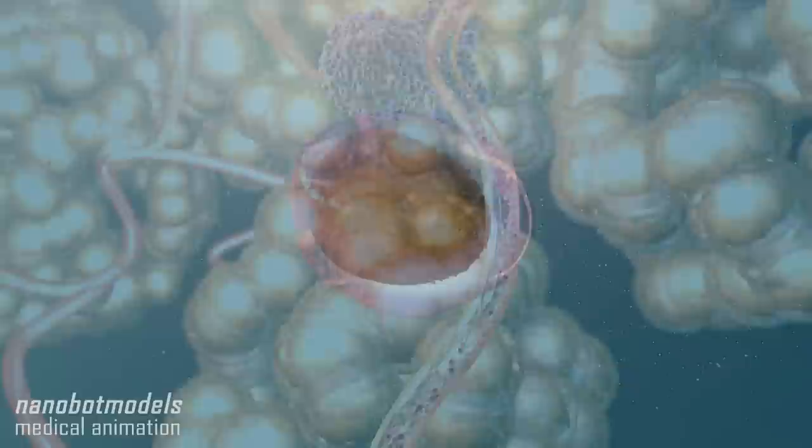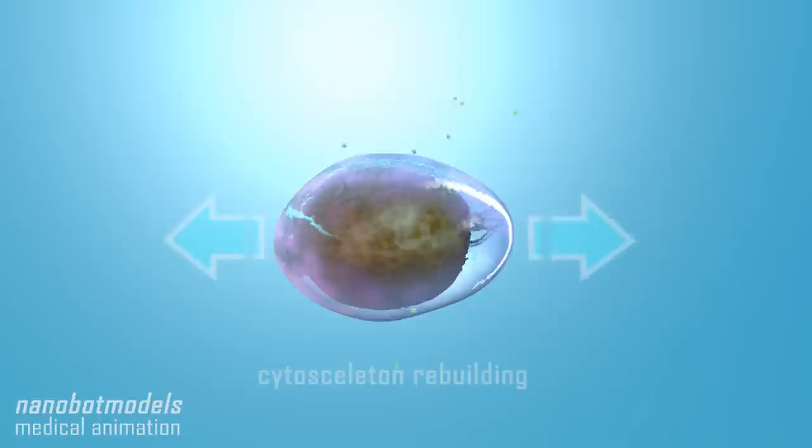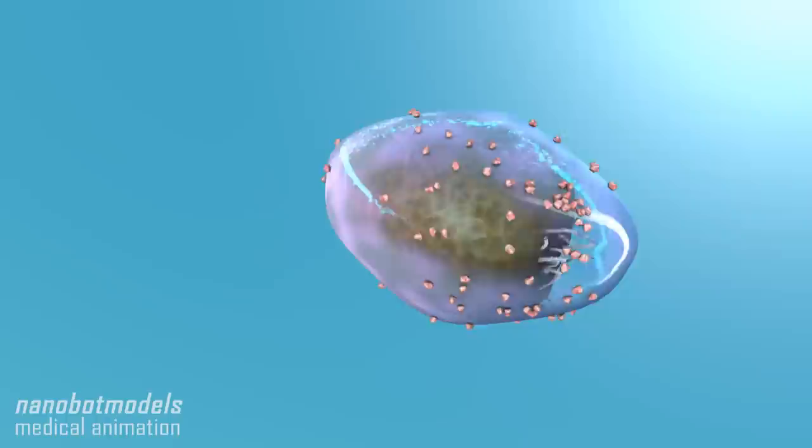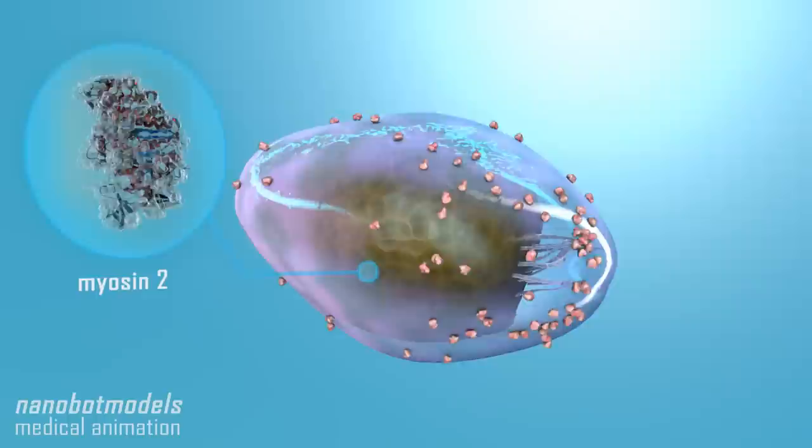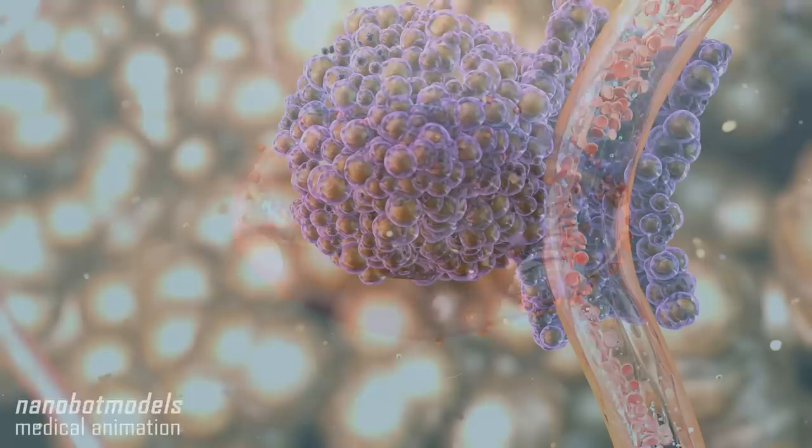During this process, called tumor cell invasion, a tumor cell undergoes changes. The cell changes its form and develops a preferential direction. Special receptors appear on the membrane, and the protein myosin 2 is activated, which makes the cell move. The hind part of the cell separates from its surroundings and draws to its front part. The cell leaves the tumor and starts traveling in the bloodstream.